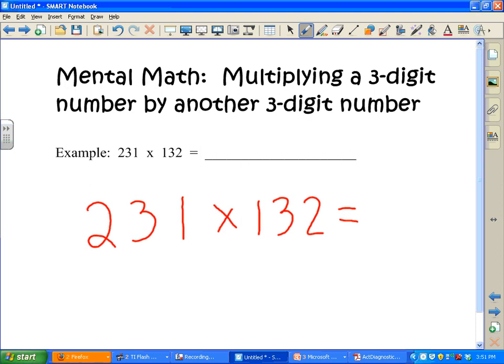So the first step is to multiply the last digit here with the last one here. If we multiply 1 times 2, your answer ends in a 2.